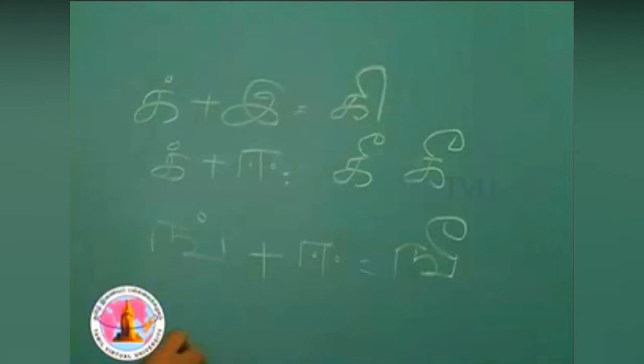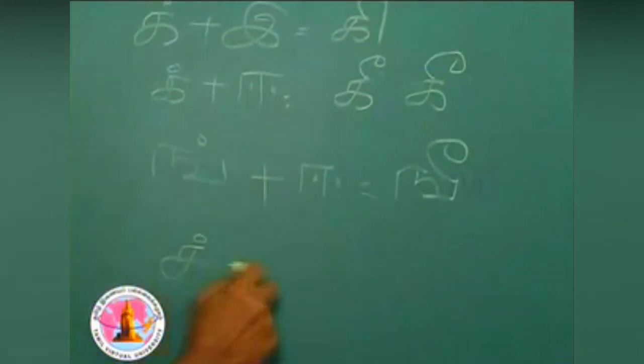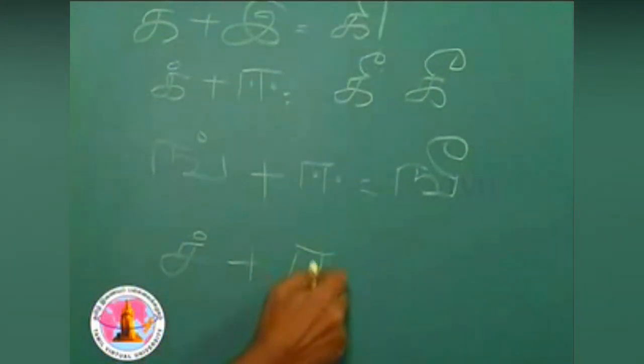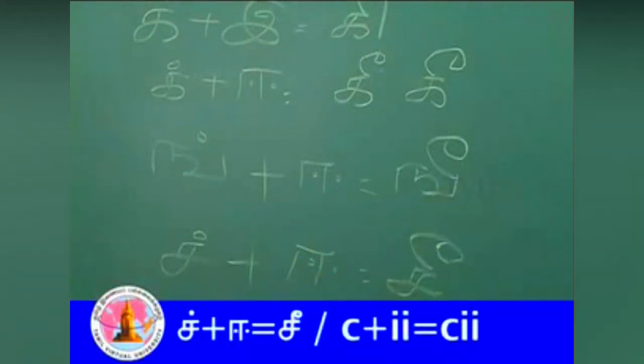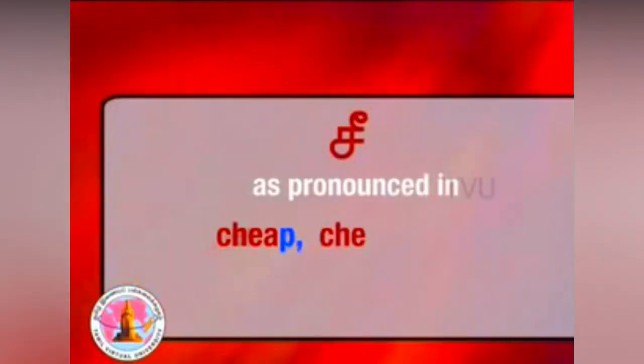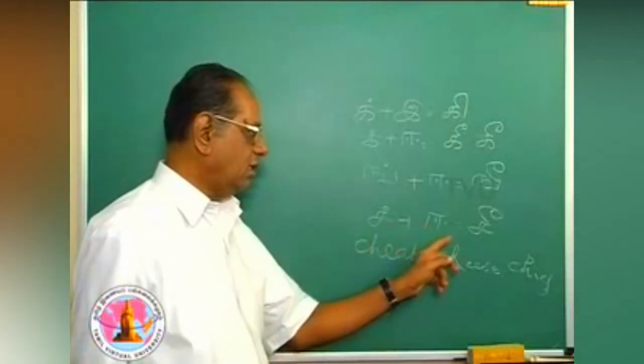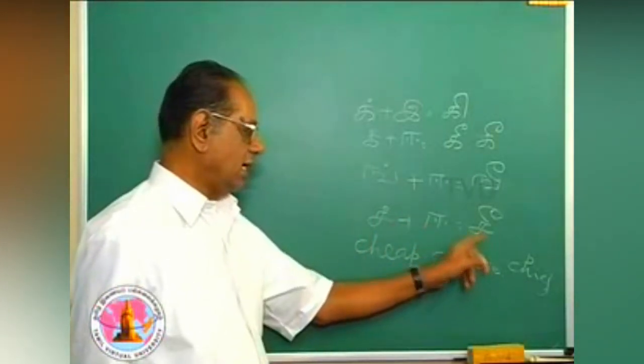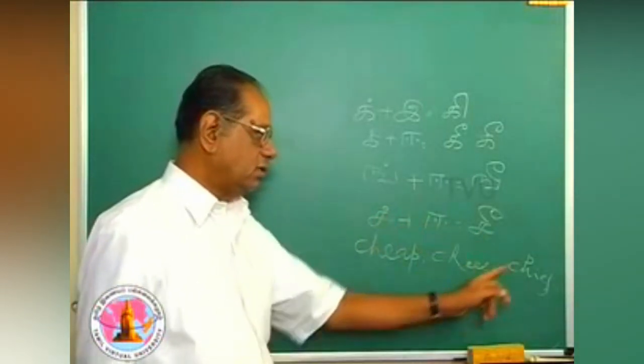Now, the third letter is itch and ee, it becomes chi, the same method, the same sound. E is combined with all the consonants. This is itch plus ee, chi, as in chi, cheese and chief.